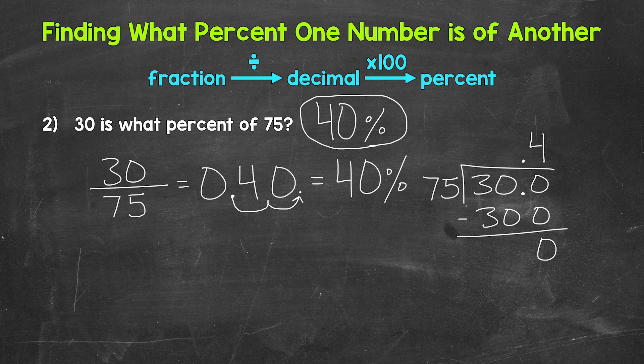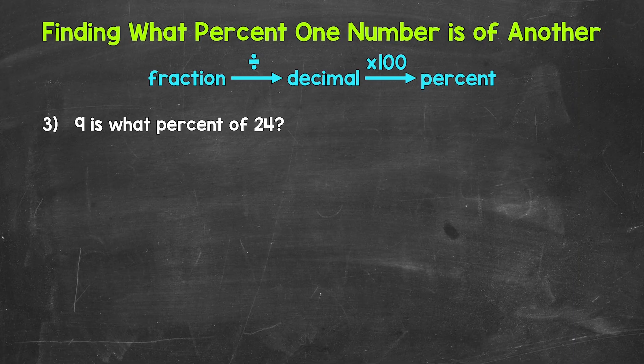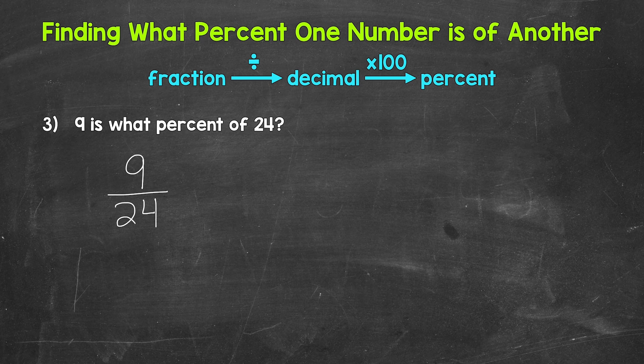Let's move on to number three. We have: 9 is what percent of 24? Let's think of this as 9 out of 24, and write this as a fraction — 9 over 24. And now we divide: we divide 9 by 24, the numerator by the denominator. That's going to give us our decimal. So let's do 9 divided by 24.